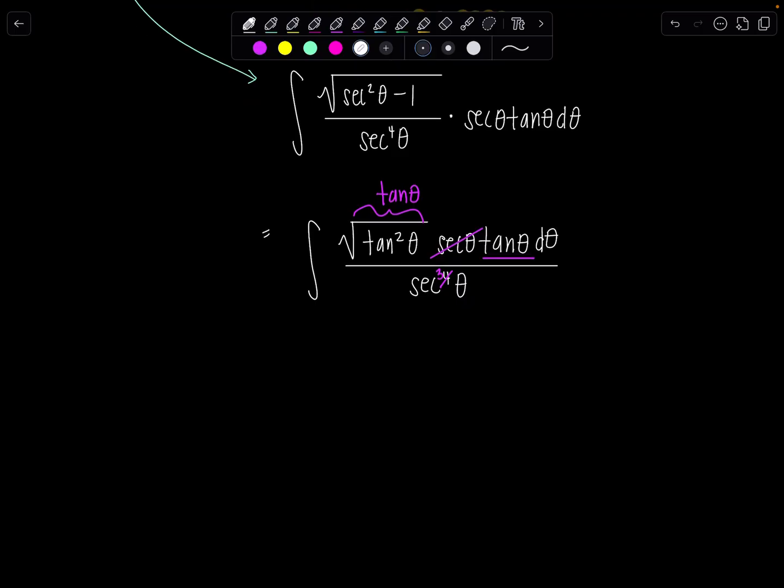So let's rewrite what's left over. We've got integral tan squared theta over secant cubed theta d theta.